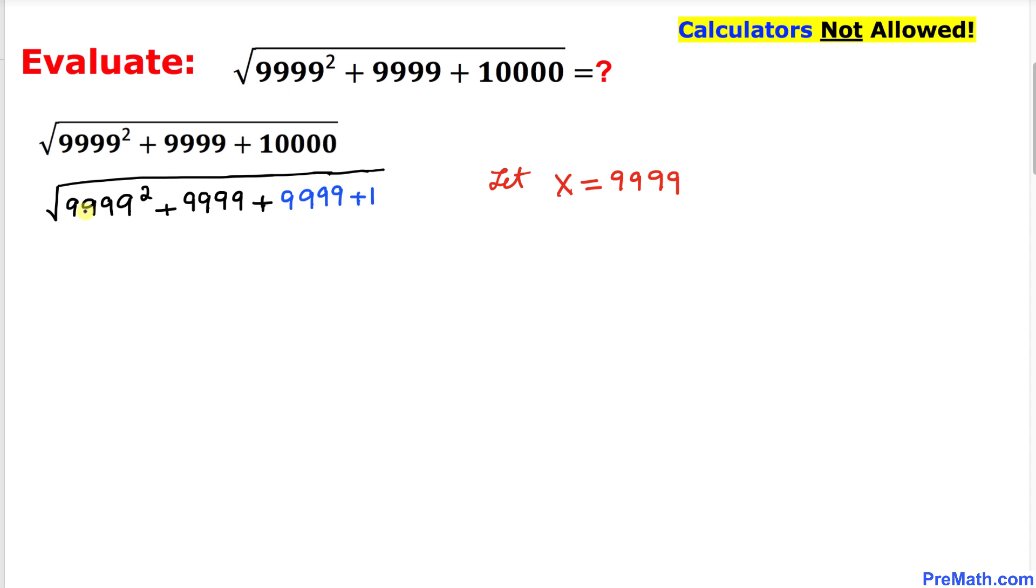Then our radical expression is simply going to become x squared, because I replace this 9999 by x, and then plus x, and then plus this x as well, and then plus 1.